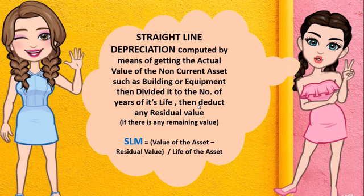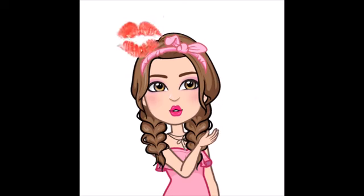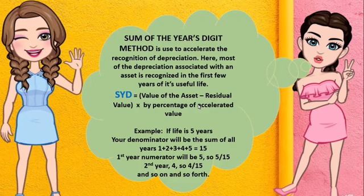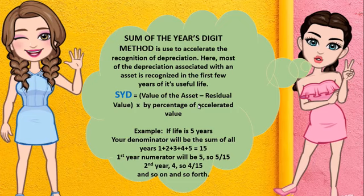Sum of the Years Digit Method is used to accelerate the recognition of depreciation. Most of the depreciation associated with an asset is recognized in the first few years of its useful life. The formula is: Sum of the Years equals the value of the asset minus residual value, multiplied by the percentage of accelerated value.